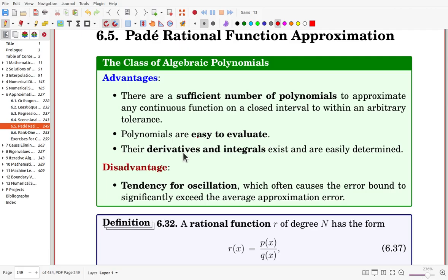However, they show a disadvantage. They have a tendency for oscillation, and often result in the error bound to exceed the average approximation error significantly.